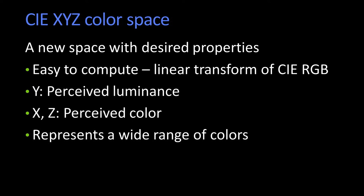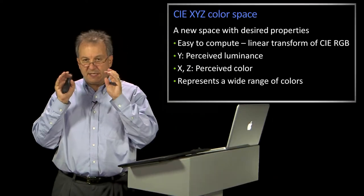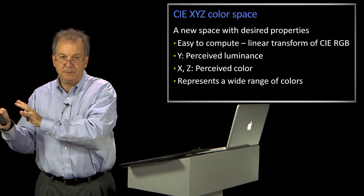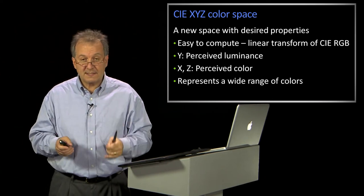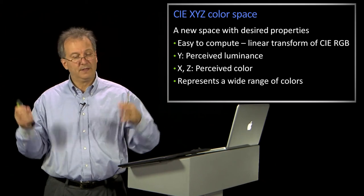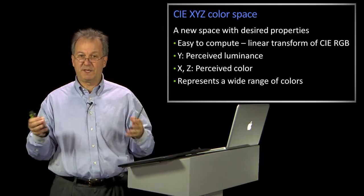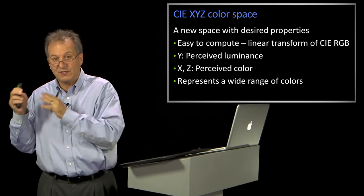It was going to be a linear transform of RGB, but the prominent value was going to be called Y. What does Y stand for? It stands for luminance. Don't ask me why, because it's actually from the XYZ space.